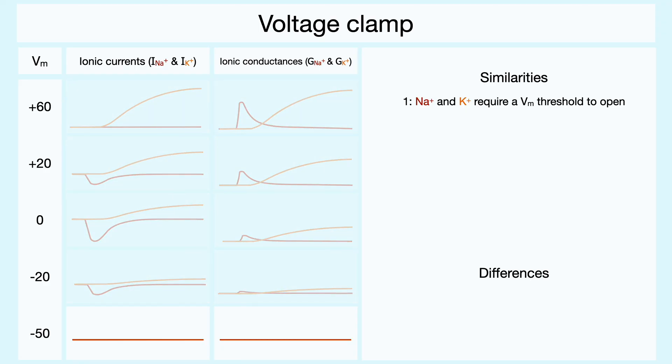Indeed, at some values, like here at negative 50 millivolts, there is no conductance, which implies that the channels are voltage-gated. Moreover, you will notice that for both channels, the conductance is proportional to the step in depolarization.